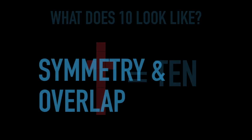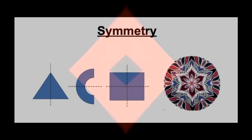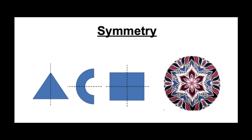Before we make some art, let's look at two art vocabulary words. Symmetry is the quality of being made up of the same parts facing each other, as you see in the first three shapes. Or they could also be facing each other around a point, like the last example.